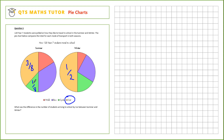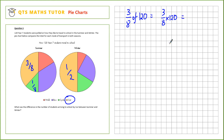Let's figure out how many students that represents. That's 3/8 of 120 students — as a calculation, that's 3/8 times 120. To calculate without a calculator: 120 divided by 8 is 15, so 3 times 15 is 45.